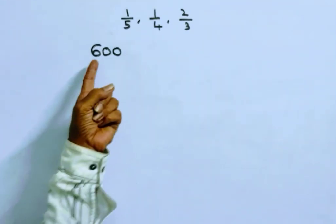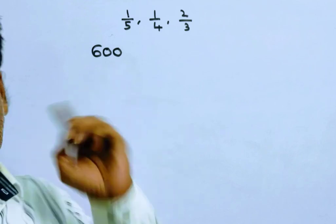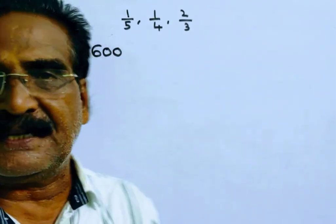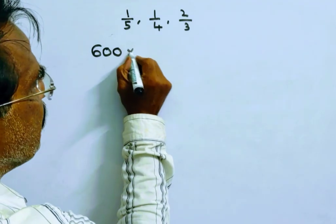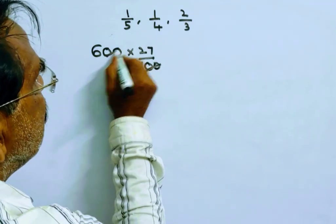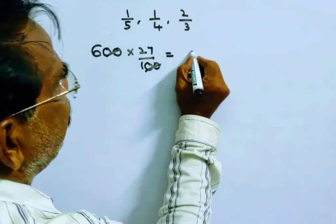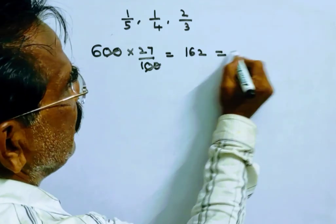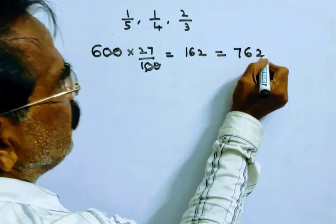See friends, say the cost price is 600. He wants an overall profit of 27%, so 27% overall profit means 6 into 27 equals 162. So 600 plus 162 equals 762. So he has to realize 762 rupees.